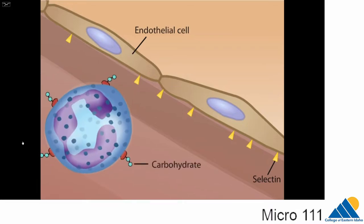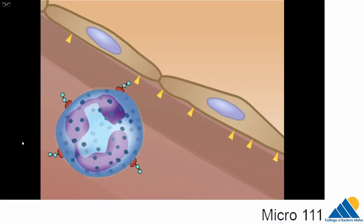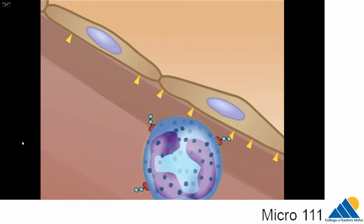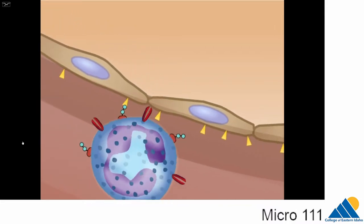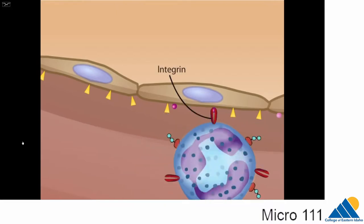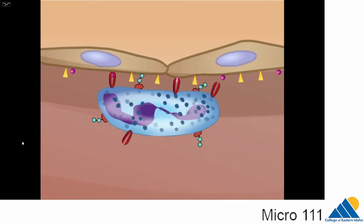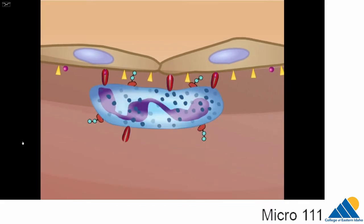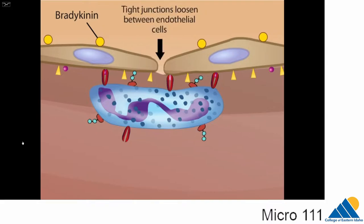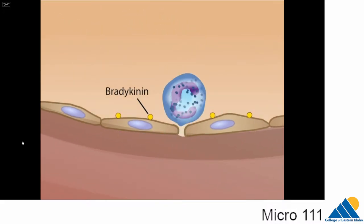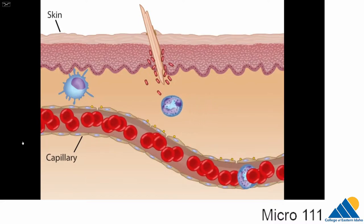Selectin binds to carbohydrates on the surface of neutrophils, snagging the cells as they flow by in the bloodstream and slowing them down, such that they roll along the endothelium. Inflammatory signals trigger these rolling neutrophils to express adhesion molecules called integrins on their surface. The integrins lock onto adhesion molecules called ICAM-1 and VCAM-1 on endothelial cells. The tight adhesion stops the rolling and the neutrophils begin to stretch out along the endothelial surface. Damaged tissue cells in the area of inflammation release bradykinin, a 9-amino acid polypeptide that helps loosen the tight junctions between endothelial cells. Neutrophils can now initiate extravasation, in which they squeeze through the loosened endothelial wall and into the tissues where they can help macrophages attack the invading microbes.